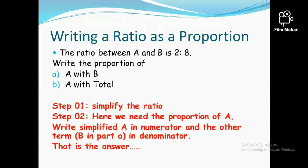This is another important topic: writing a ratio as a proportion, meaning writing it as a fraction. They have given the ratio between A and B as 2 to 8. Write the proportion of A with B, and A with total.